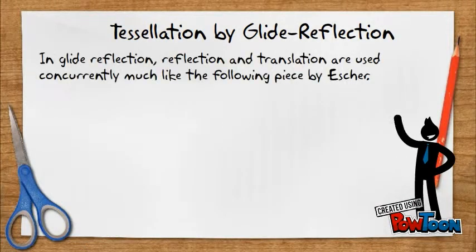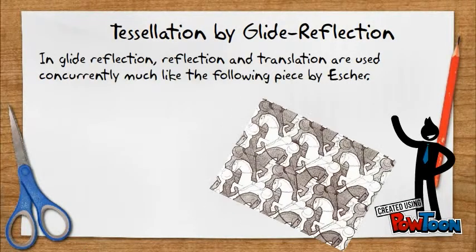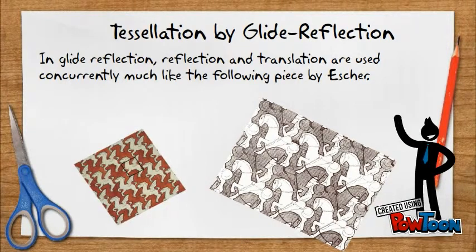Tessellation by Glide Reflection. In Glide Reflection, Reflection and Translation are used concurrently, much like the following piece by Escher.